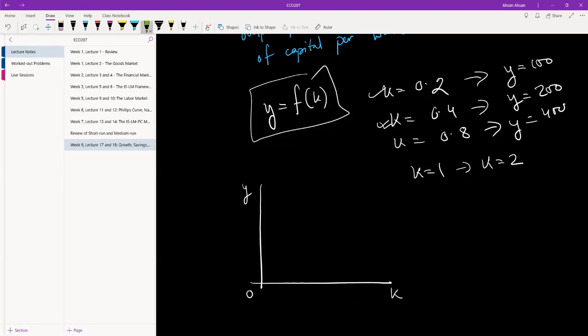Now if we were going with constant returns to scale, what we would see is a straight line. If capital per worker k, small k, increased by 10 percent, small y increased by 10 percent. If small k increased by 200 percent, small y increased by 200 percent. But of course we've already talked about why that is not a very realistic scenario.